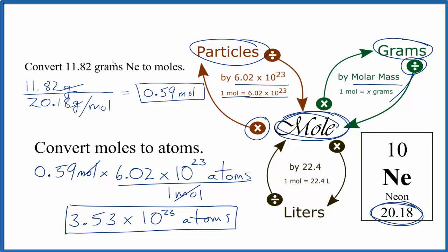So to recap, we took the grams we were given, we converted that to moles, then we took the moles of neon, multiplied by Avogadro's number, to get atoms of neon. This is Dr. B, and thanks for watching.